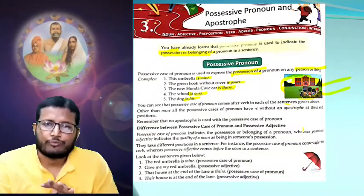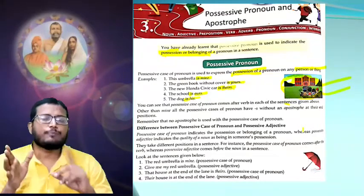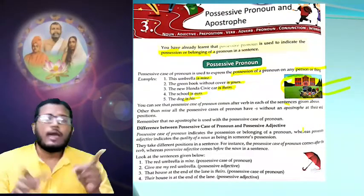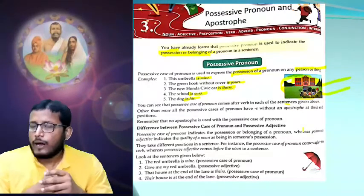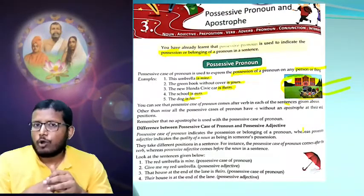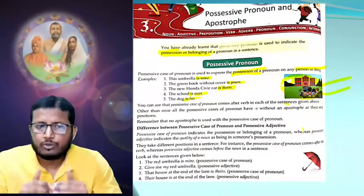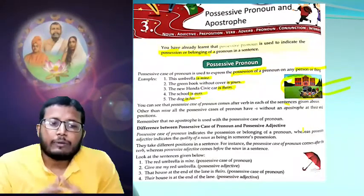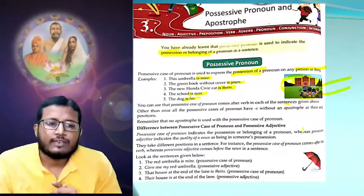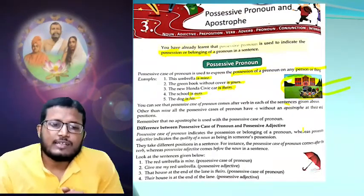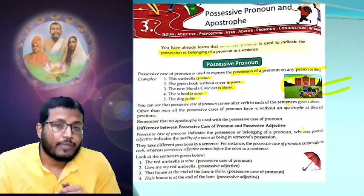So for the difference between possessive pronoun and apostrophe based on the comma: possessive pronoun doesn't carry any comma, but apostrophe carries a comma. Remember: no apostrophe is used with the possessive case of pronoun. After this — difference between possessive case of pronoun and possessive adjective.